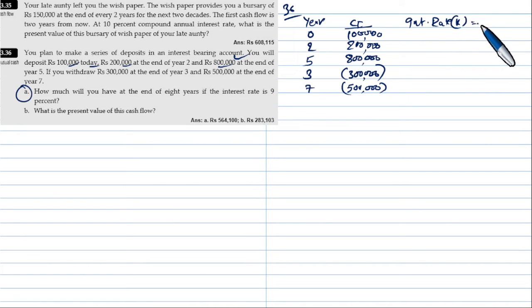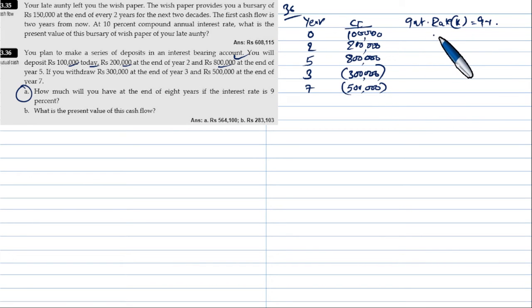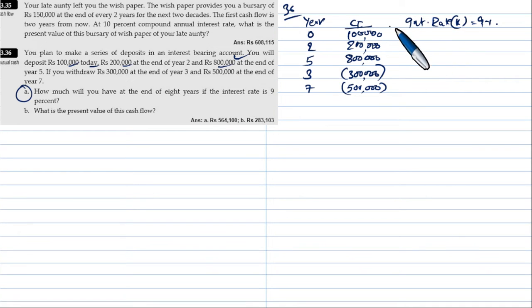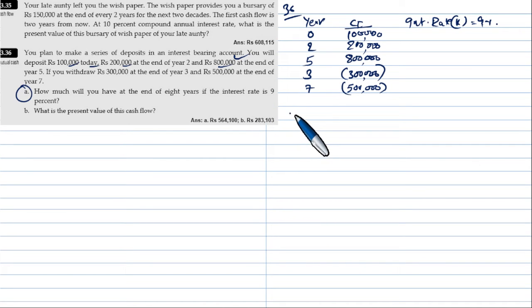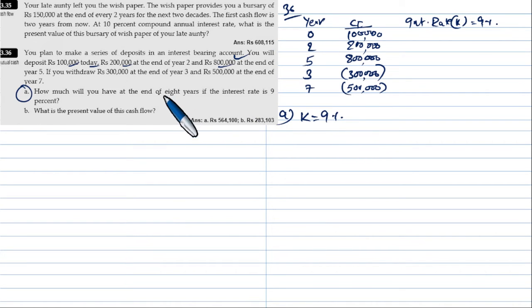At the end of year 8, how much will you have? The interest rate k is equal to 9%. We need to find the future value at the end of year 8.